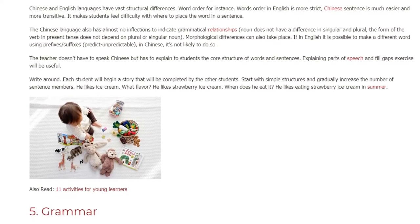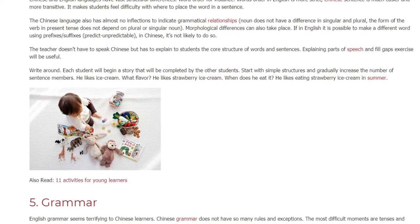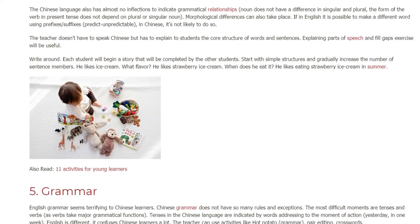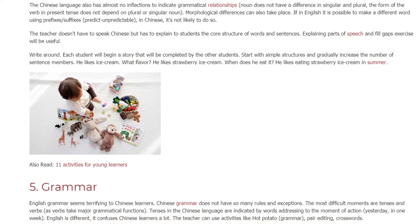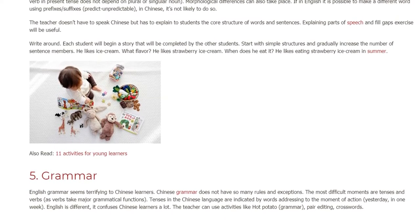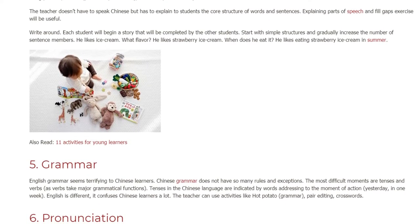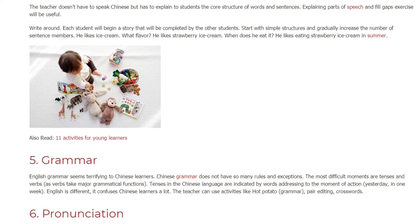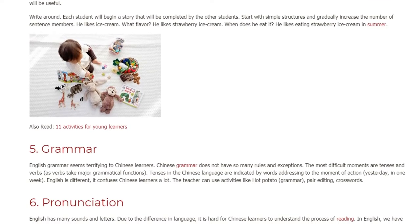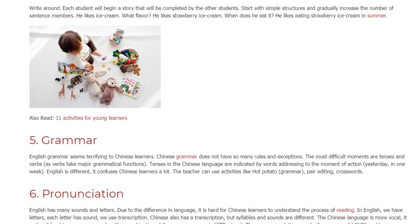Challenge 5: Grammar. English grammar seems terrifying to Chinese learners. Chinese grammar does not have so many rules and exceptions. The most difficult moments are tenses and verbs, as verbs take major grammatical functions. In Chinese, tenses are indicated by time words like 'yesterday' or 'in one week,' which confuses Chinese learners a lot. The teacher can use activities like hot potato grammar, pair editing, and crosswords.